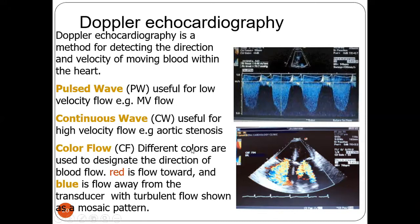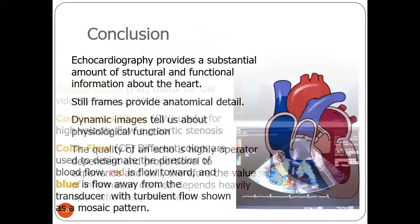In color flow Doppler, different colors designate the direction of blood flow. Red indicates flow toward the probe and blue indicates flow away from the probe. When there is turbulence, a mosaic pattern is shown, indicating an abnormality — whether a stenotic valve or a regurgitant valve.